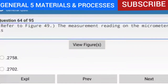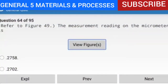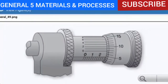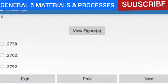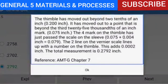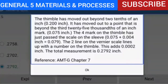Question 64 of 95: Refer to figure 49 — the measurement reading on the micrometer is 0.2792. The thimble has moved out beyond 0.200 inch, then beyond the third 25-thousandths mark (0.075 inch). The four mark on the thimble has just passed the scale on the sleeve (0.075 plus 0.004 equals 0.079). The two line on the Vernier scale lines up, adding 0.0002. Total measurement: 0.2792 inch.